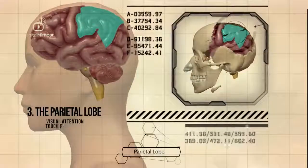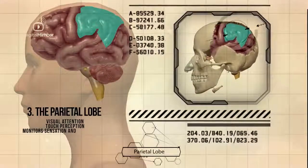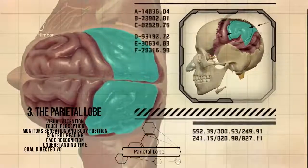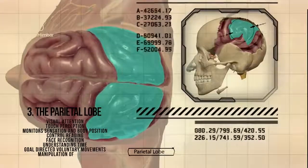The parietal lobe is responsible for visual attention, touch perception, monitoring sensation and body position, control reading, face recognition, understanding time, goal-directed voluntary movements, and manipulation of objects.